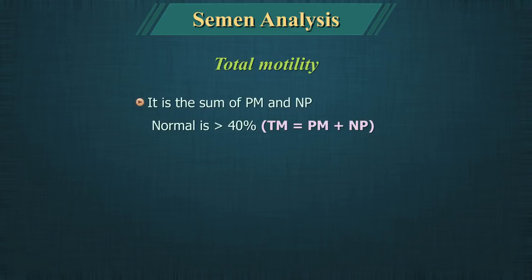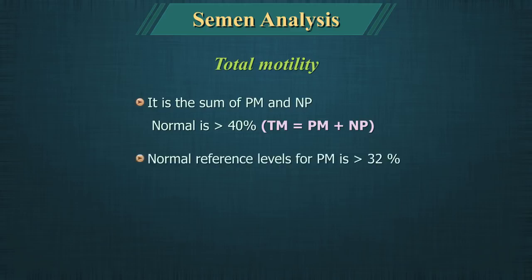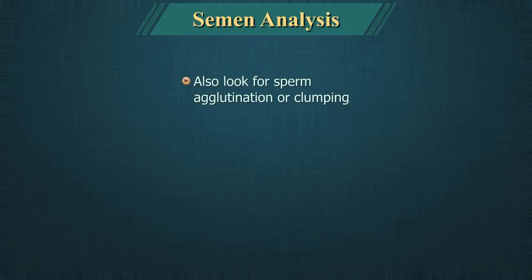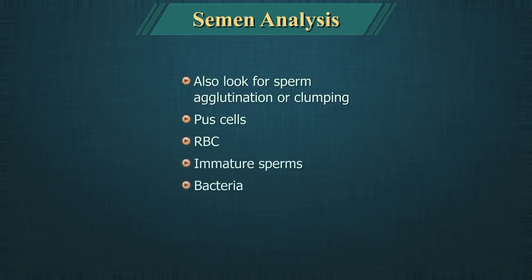Motility is graded as: Progressive motility — spermatozoa moving actively either linearly or in a large circle regardless of speed. Non-progressive motility — spermatozoa showing motility but with absence of progression, for example moving slowly in small circles or only a flagellar beat seen. Immotility — spermatozoa showing no movement whatsoever. Total motility is the sum of progressive and non-progressive motility and should be more than 40%. The normal reference level for progressive motility is more than 32%. Also look for sperm agglutination, pus cells, RBCs, immature spermatozoa, bacteria, trichomonas, etc.